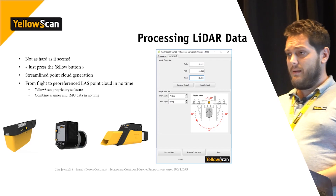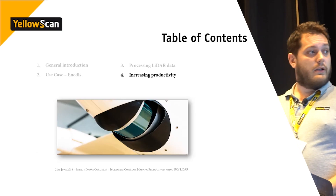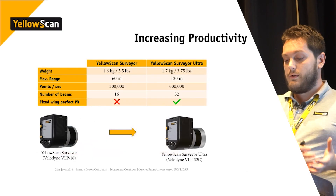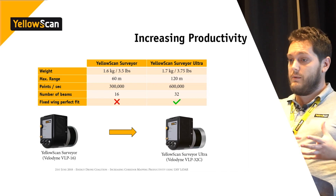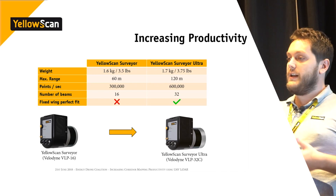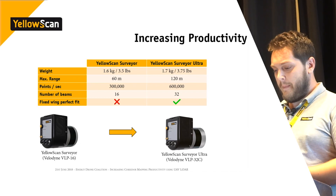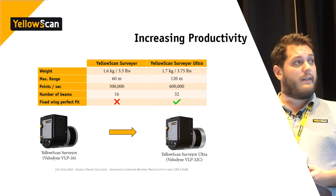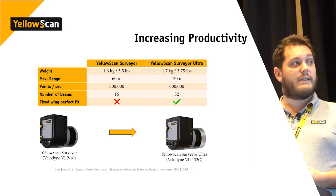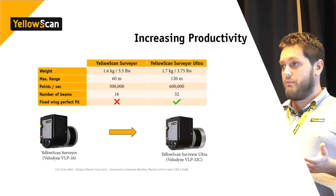To increase productivity, you could switch from the Surveyor used in this case to the newer Surveyor Ultra, which integrates the Velodyne VLP-32C. The weight is not that different — it goes from 1.6 kg to 1.7 kg — but the rest of the features are pretty much doubled.